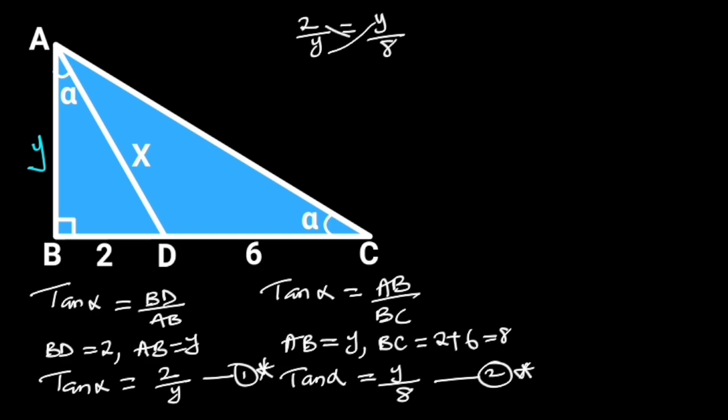By cross multiplication, we will have Y times Y is equal to 2 times 8. Y times Y is Y squared. 2 times 8 is 16. Taking the square root of both sides will give us Y is equal to 4.